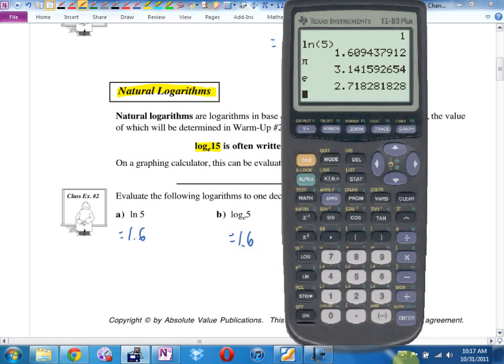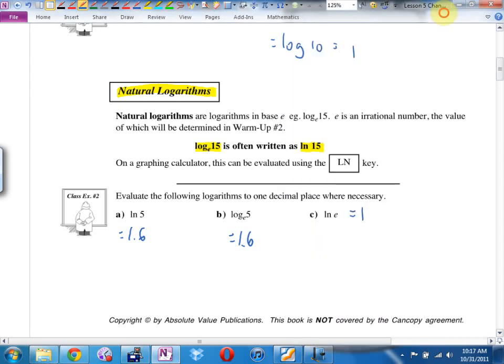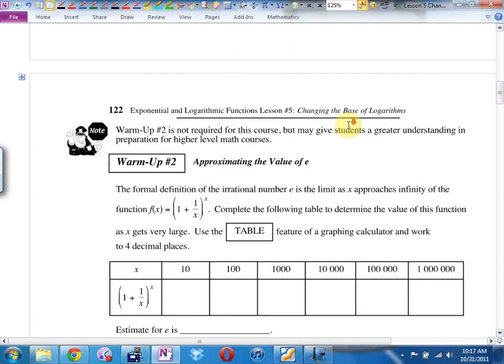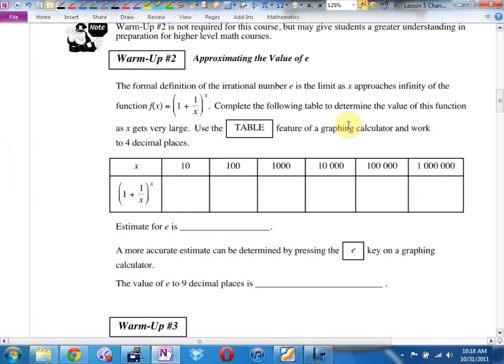Those are the only two log bases your calculator has, log base 10 and log base E. What's so special about this number, Mr. Dewick? Turn the page. First of all, where it says the value of E to 9 decimal places is, can you write 2.718281828, and then a dot, dot, dot, to show that it goes forever without repeating? The number that's on your calculator right now, if you've typed it into your calculator.